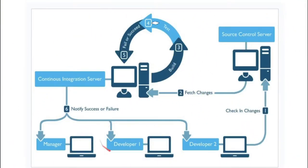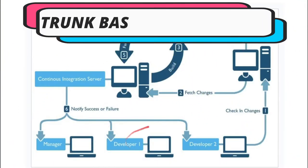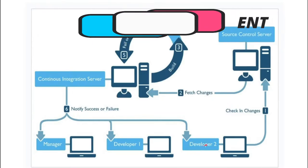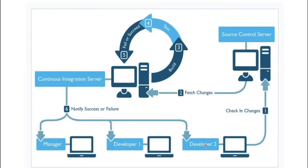For example, there is a software team with developers where each developer is responsible for implementing a feature. The developer creates a branch, starts implementing the feature, and once the feature is ready, merges the branch to the master or trunk. The developer frequently merges code to the master so that we can get early feedback.